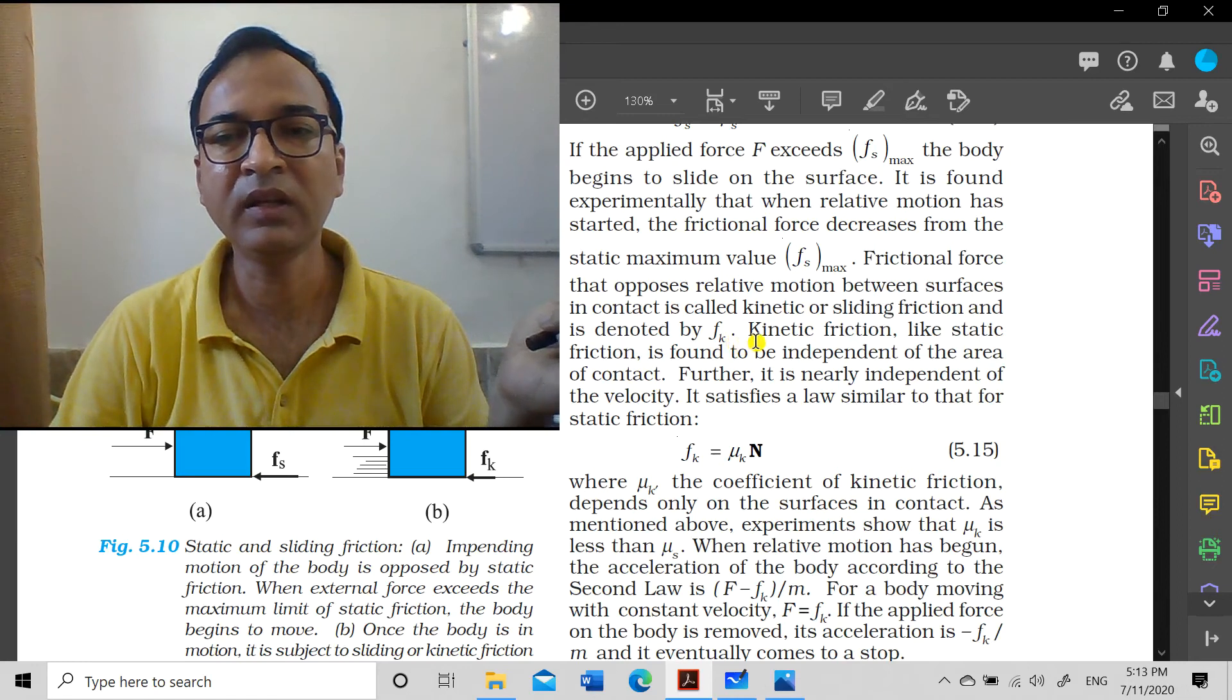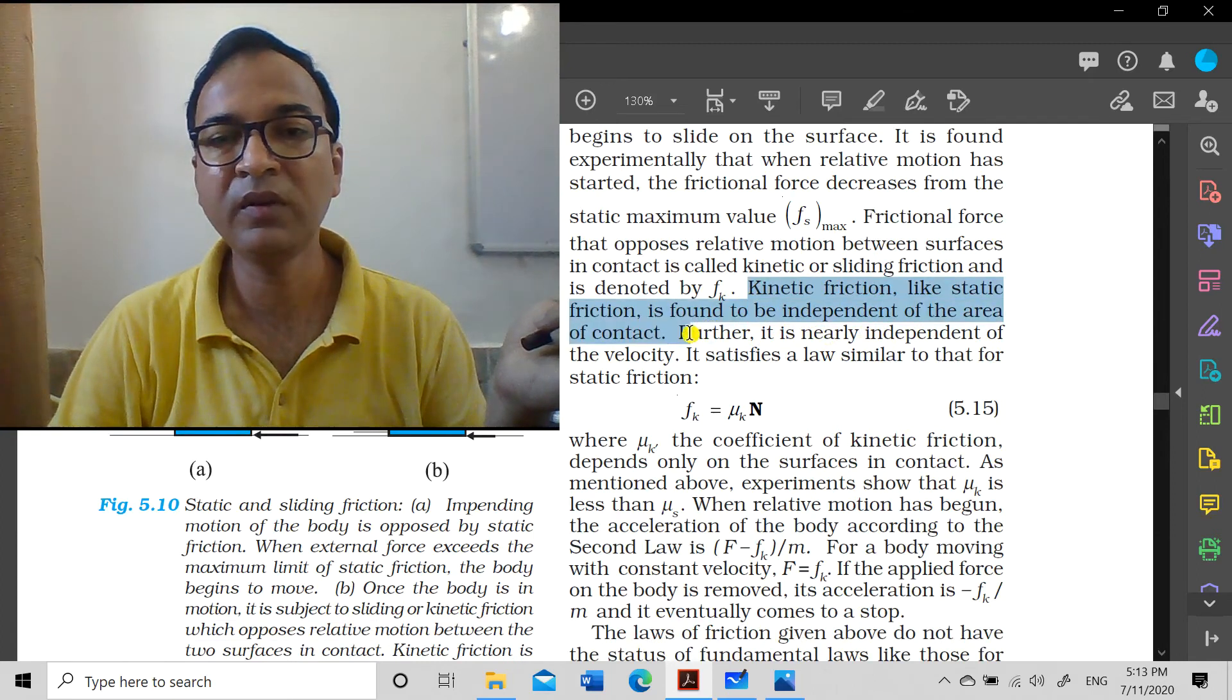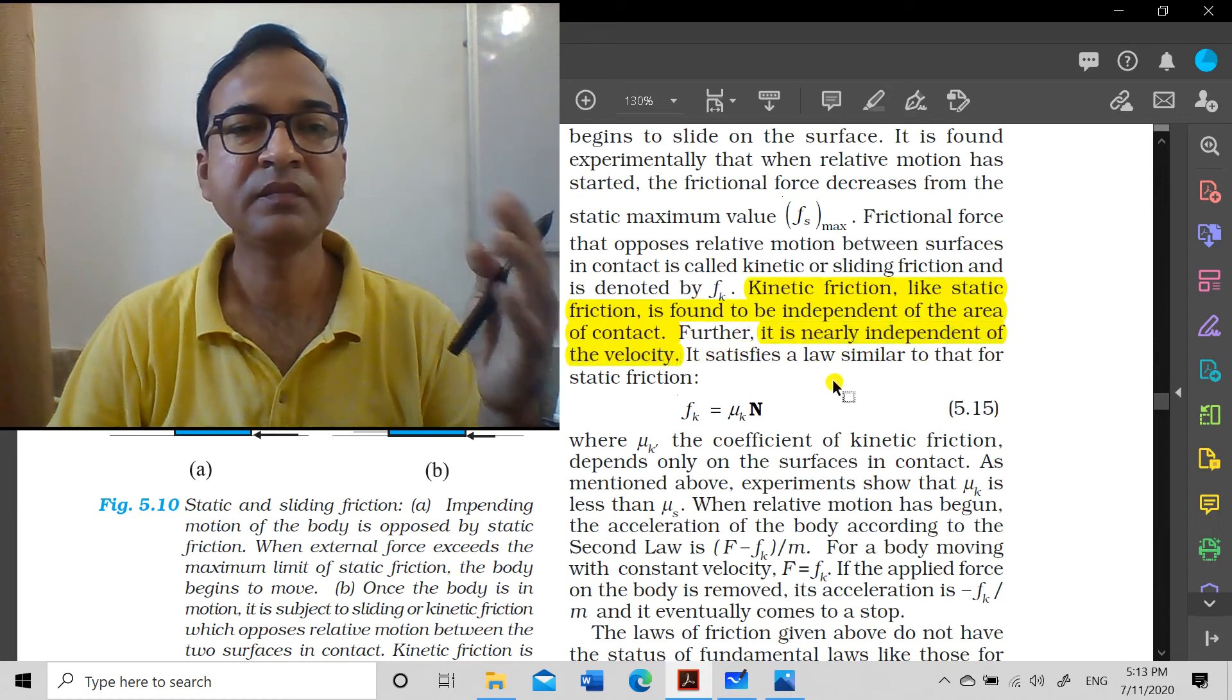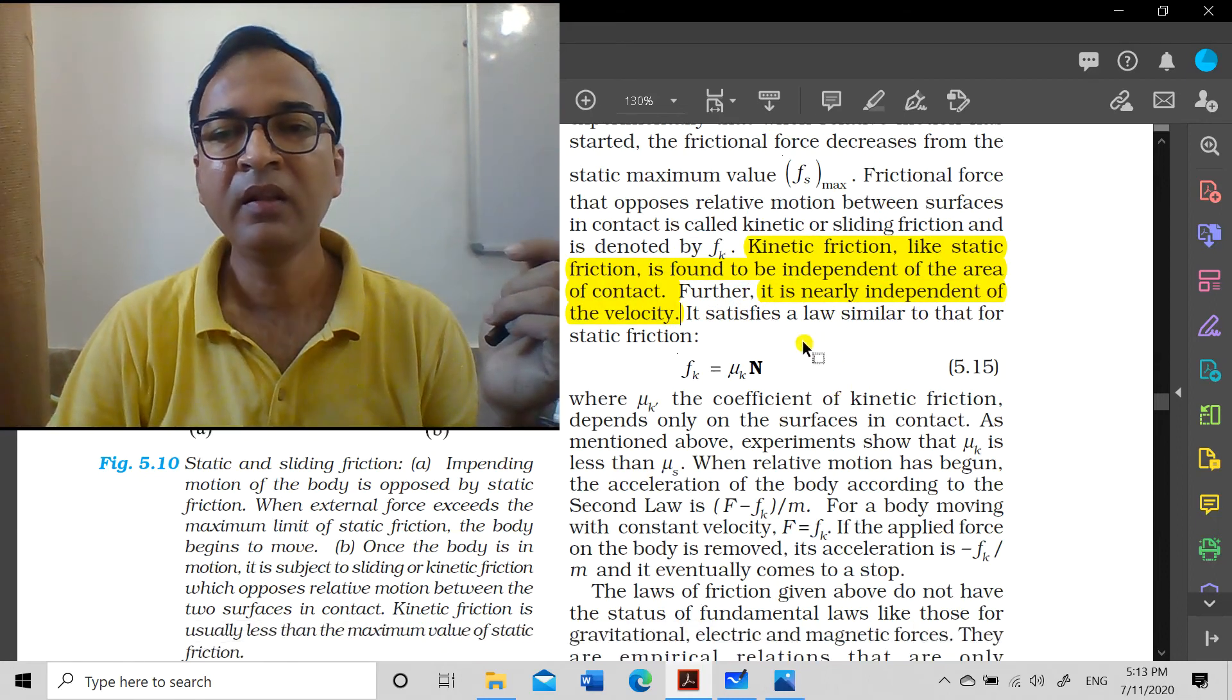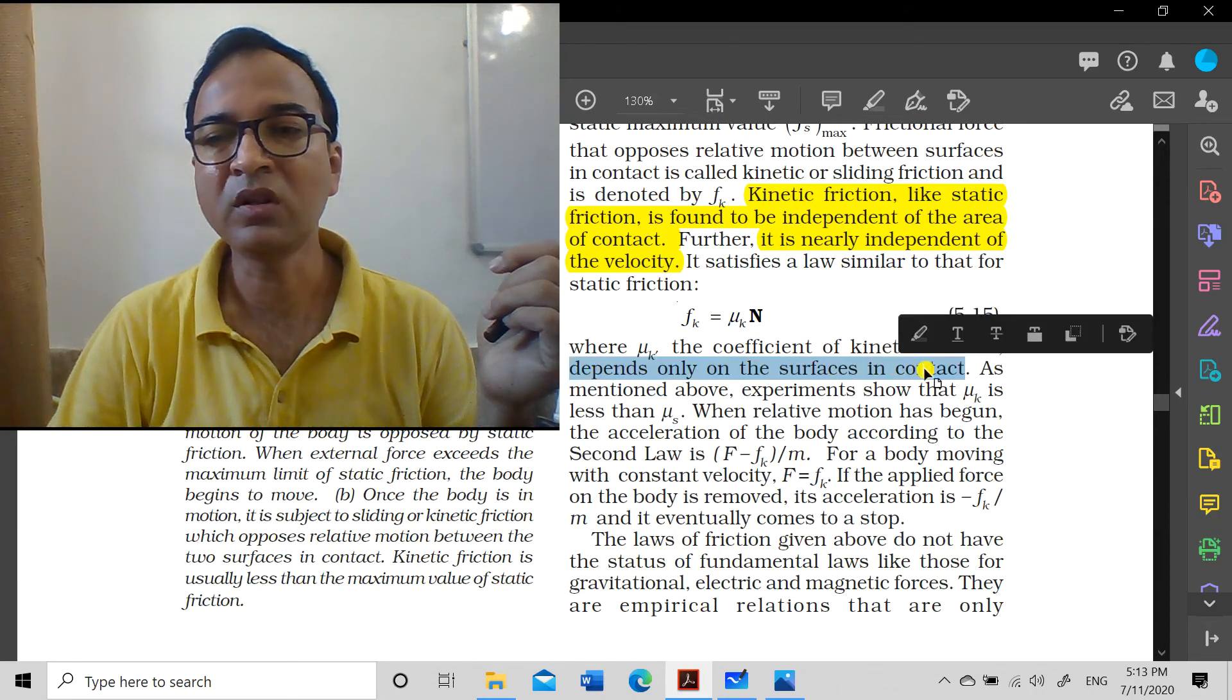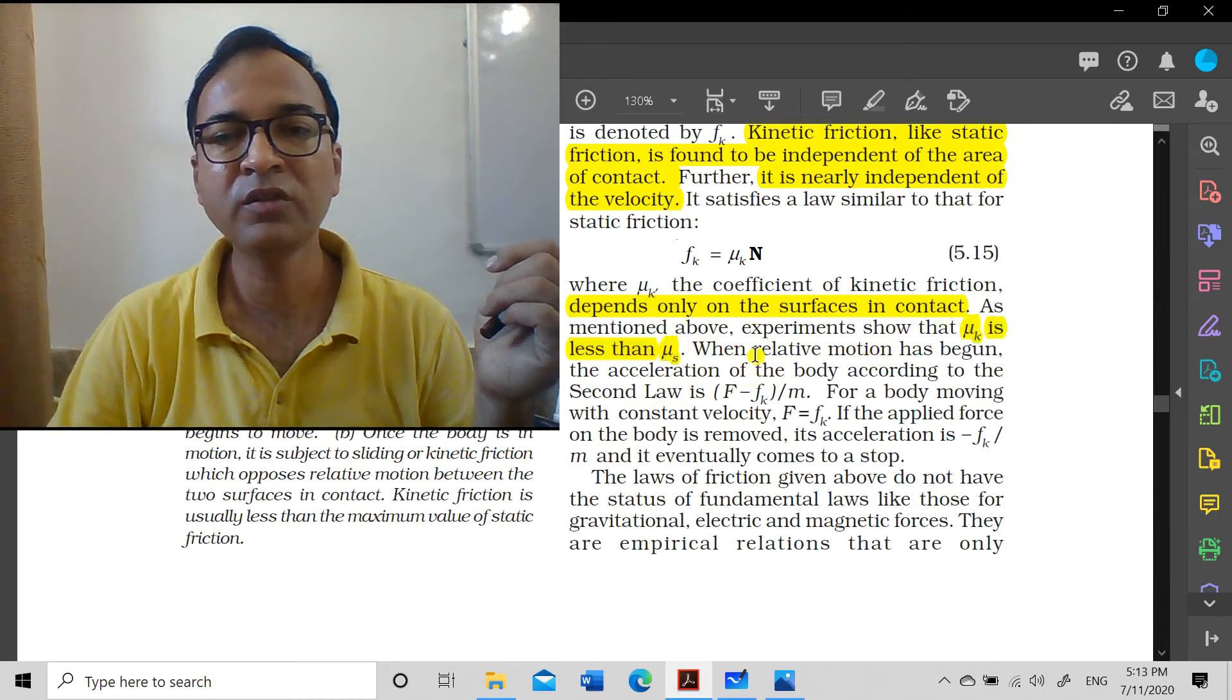Like static friction is found to be independent of the area of contact, kinetic friction also doesn't depend on area of contact like static friction. Further, it is nearly independent of velocity - this is an important factor. It doesn't depend on velocity either, whether the object is moving slowly or fast. At this level, we assume it's speed independent. It satisfies a law similar to that for static friction: fk equals mu k times N, where mu k is the coefficient of kinetic friction depending only on the surfaces in contact. As mentioned above, experiments show that mu k is less than mu s.